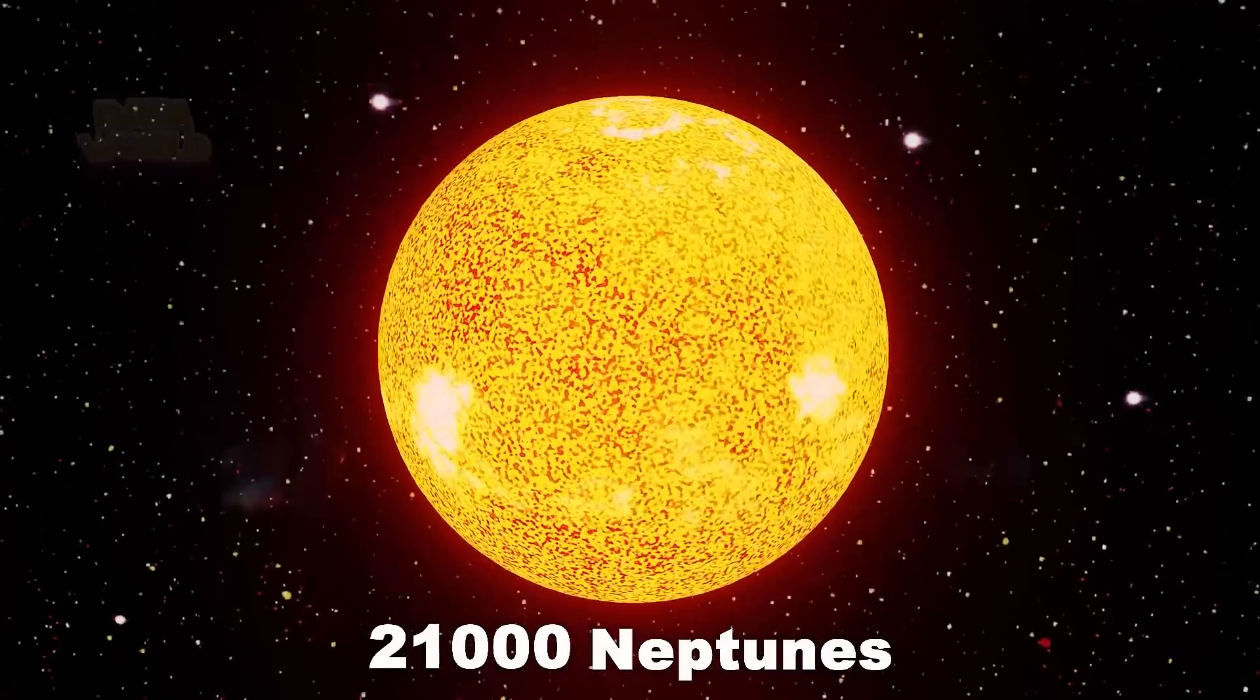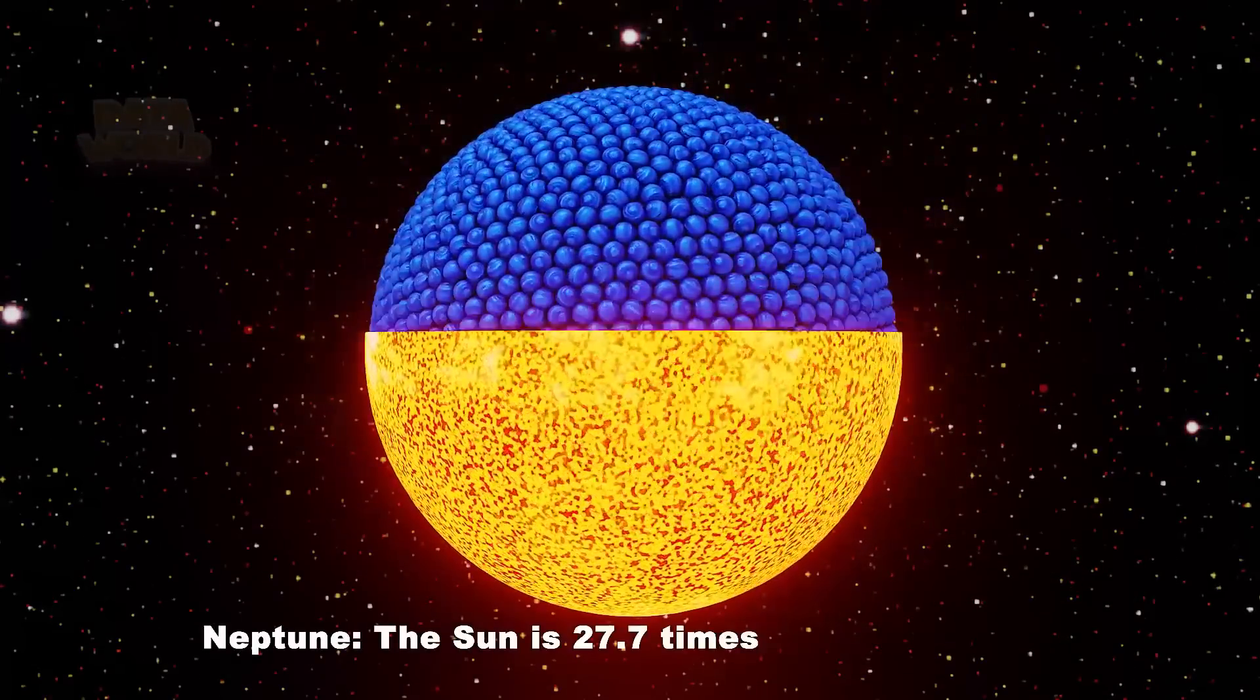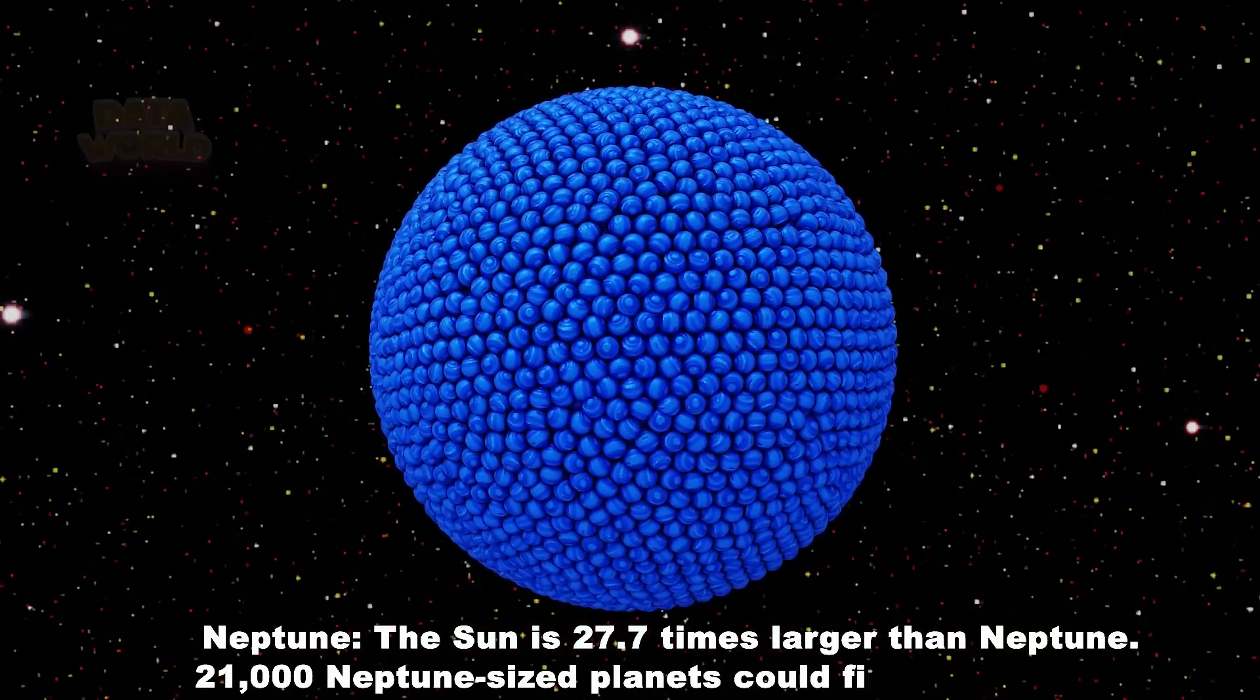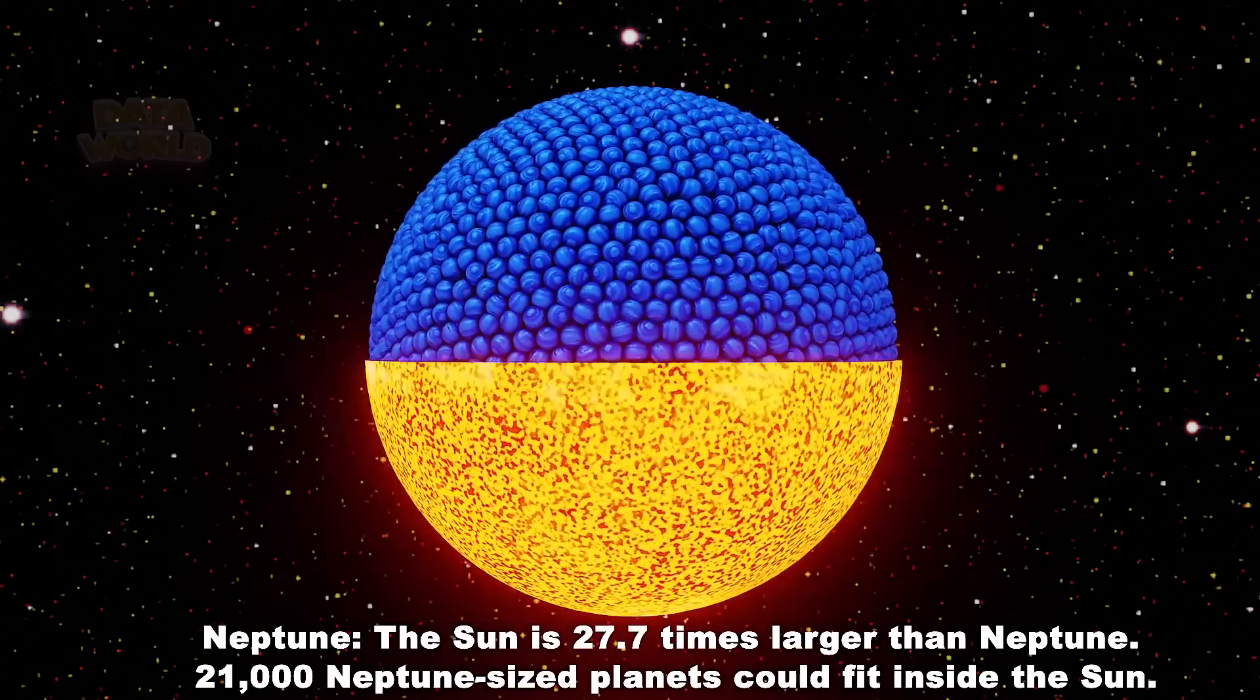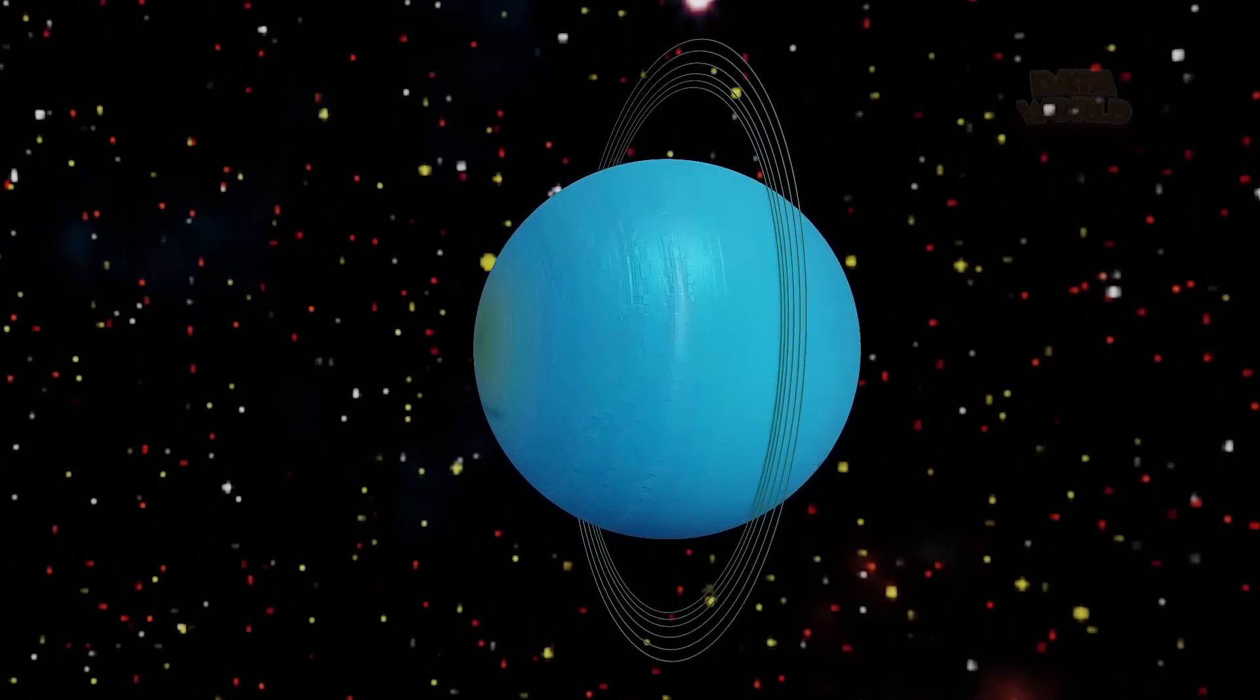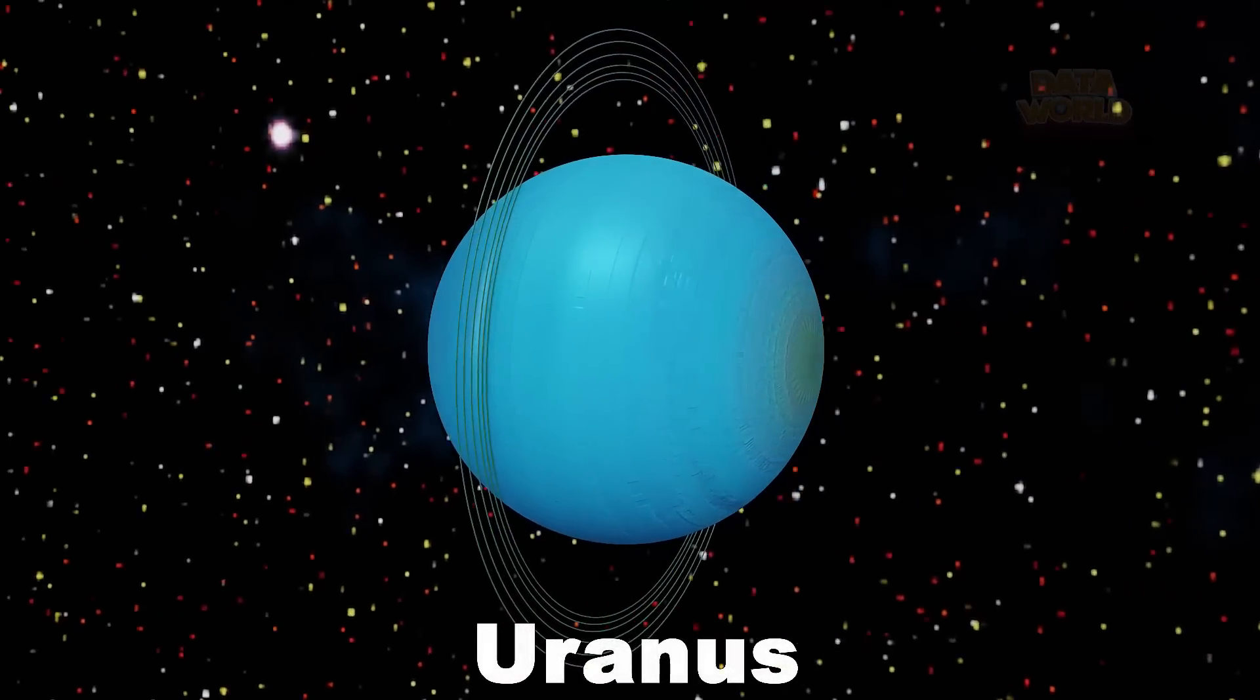21,000 Neptune. The Sun is 27.7 times larger than Neptune. 21,000 Neptune-sized planets could fit inside the Sun.